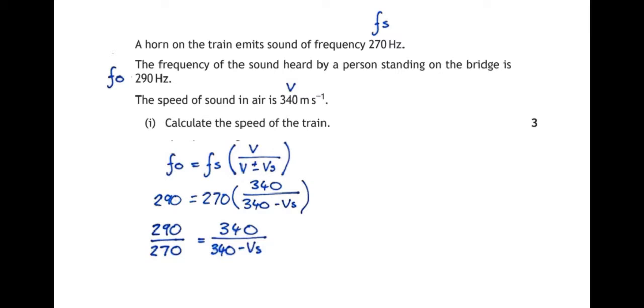Now, the quantity that I'm trying to figure out is on the bottom of the fraction. It's always easier to work out a quantity if it's on the top of a fraction. So I'm going to be a little bit sneaky and I'm just going to flip the whole fraction the other way. So I get 340 minus VS over 340 equals 270 over 290. Now, the thing I want to know is on the top. Now I'm going to come up here because we're running out of space.